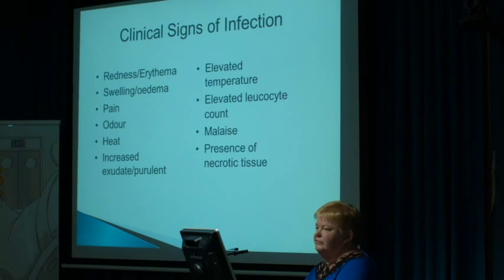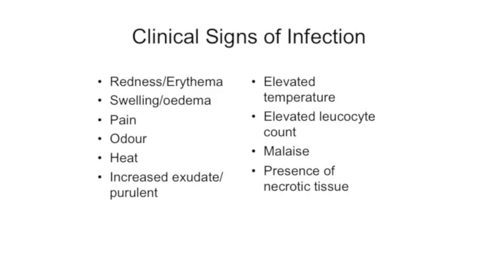We know the clinical signs of infection. We see redness and erythema, swelling and oedema, pain, odour, heat, increased exudate, and even pus. Pus is a great sign because it already tells you the wound is infected. But it goes beyond that — you need to look at their temperature, elevated leukocytes or white cell count, general malaise, and necrotic tissue in the wound. Necrotic tissue harbours both anaerobic and aerobic bacteria, and we need to know that.